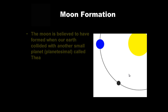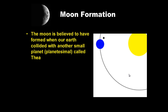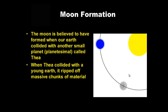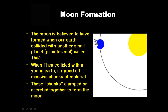Moon formation. The moon is believed to have formed when our earth collided with another small planet, a planetesimal called Theia. This happened when the earth was very young at the beginning of the formation of the solar system. When Theia collided with our young earth, it ripped off massive chunks of matter or material, and that material went around the earth and accreted or clumped together to form the moon.